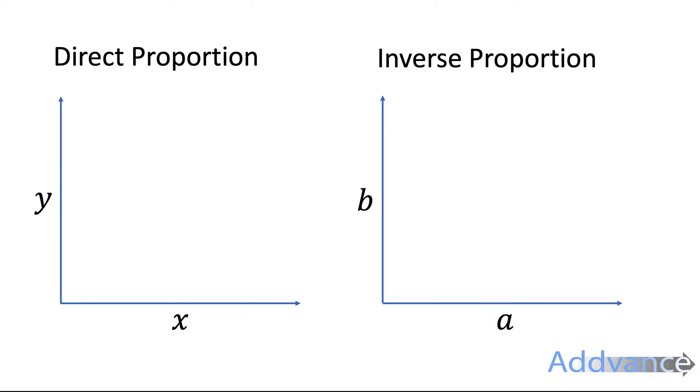Direct proportion is when you've got one thing that goes up and another thing goes up with it. So here we've got the graph of x and y and you can see as x goes up, y also goes up.